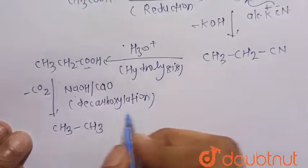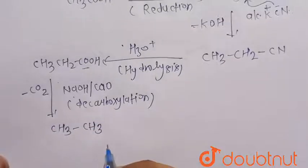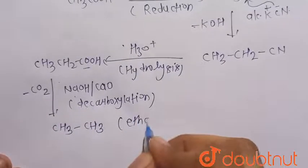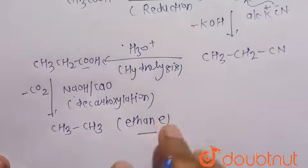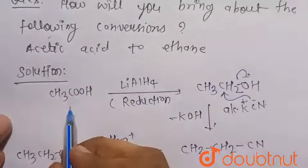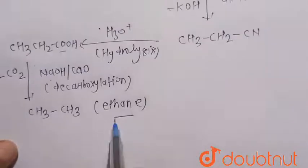Decarboxylation, that is removal of carbon dioxide. So that is the formation of our desired product, that is ethane. In this way we can convert acetic acid into ethane.